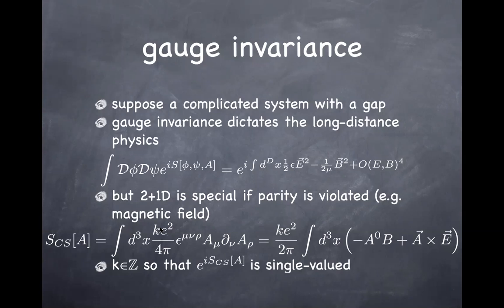That quantization turns into the quantization of the integer quantum Hall effect — the Hall conductivity is quantized in a certain unit, as I will explain in the next couple of slides. Any questions about this general argument? Maybe it makes better sense once you see the Chern-Simons term in action.